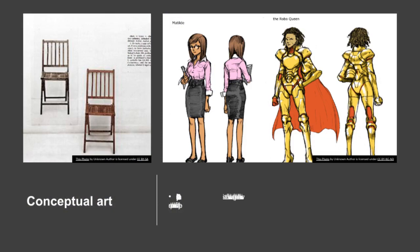Conceptual art is art for which the idea or concept behind the work is more important than the finished art object. It emerged as an art movement in the 1960s, and the term usually refers to art made from the mid-1960s to the mid-1970s. Conceptual art, also referred to as conceptualism, is art in which the concepts or ideas involved take precedence over traditional aesthetic, technical, and material concerns. Some works of conceptual art, sometimes called installations, may be constructed by anyone simply by following a set of written instructions. This method was fundamental to American artist Saul Lewitt's definition of conceptual art, one of the first to appear in print.